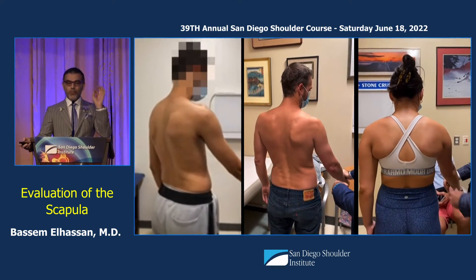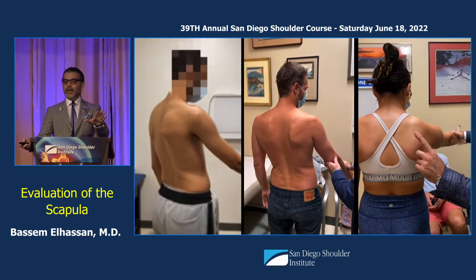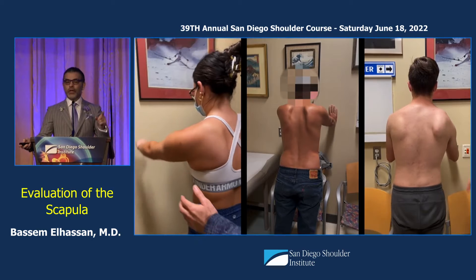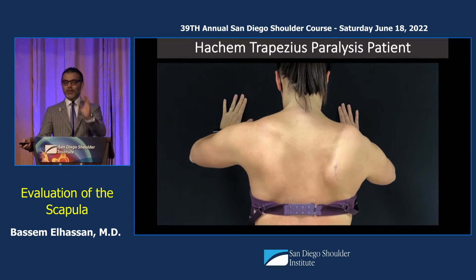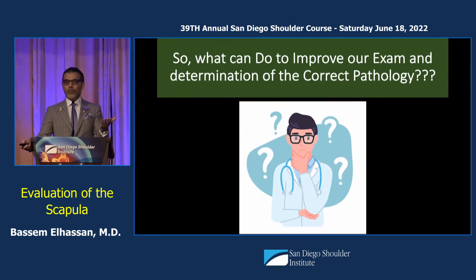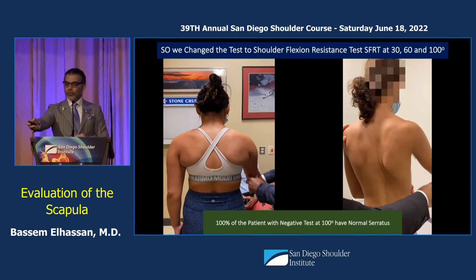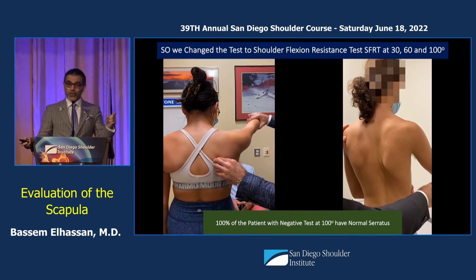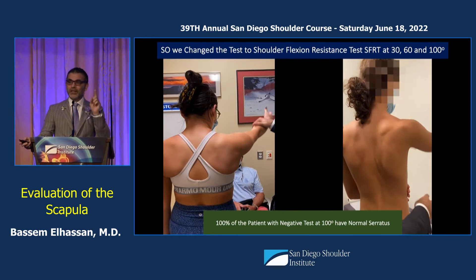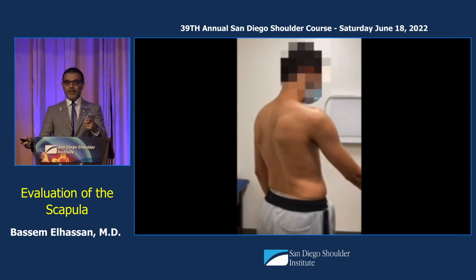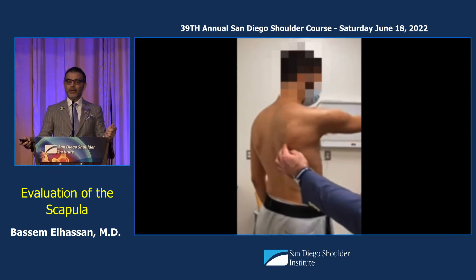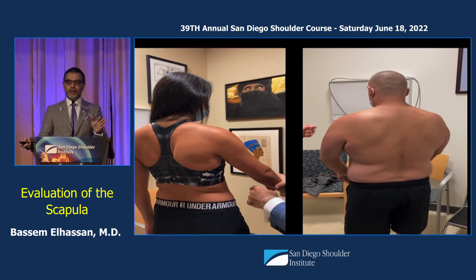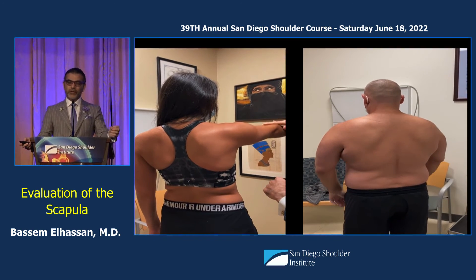We have patients with perfect serratus and perfect trapezius who still wing their scapula at 30 degrees of flexion and have a positive wall push-up test. Using surface EMG, we noticed that the pectoralis minor can take over and wing the scapula at lower angles, but above 90 degrees it cannot engage anymore. So if you do the test above 90 degrees and the scapula does not wing, the serratus is normal and the pect minor was the problem. We call this the SFRT test — shoulder flexion resistance test at 30, 60, and 100 degrees.